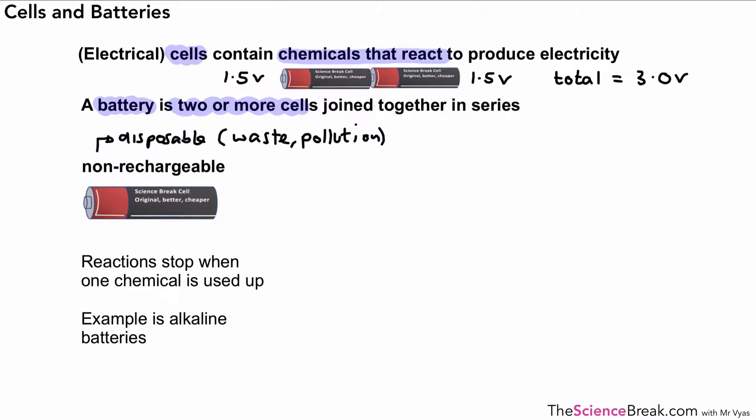The thing about the disposable batteries or the non-rechargeable ones is that the reactions that produce electricity stop when one of the chemicals inside the battery is used up. One example is what we call an alkaline battery or an alkaline cell, and this contains alkali, which we know is as a result of hydroxide ions.